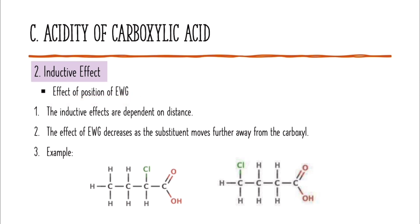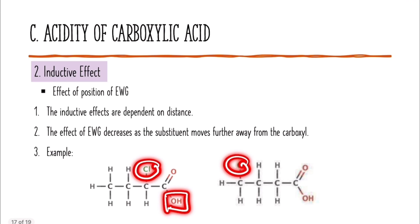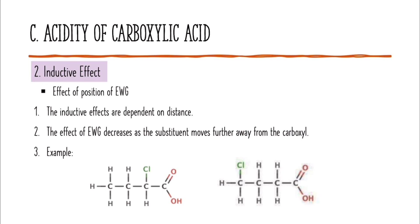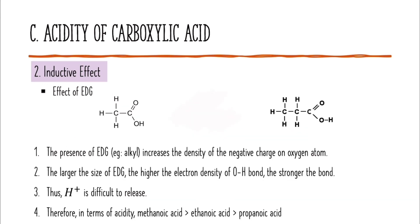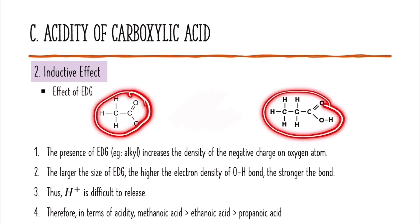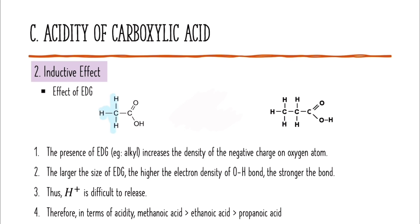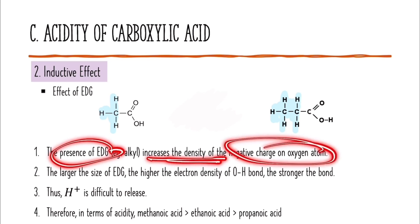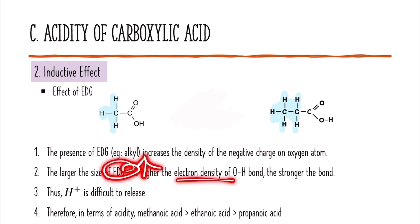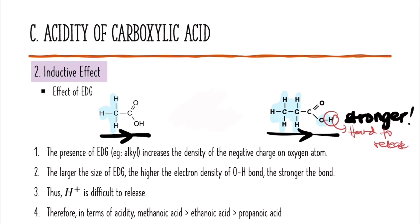The position of the EWG also affects the acidity of carboxylic acid. The effect of the EWG decreases as the substituent moves further away from the carboxyl group, so the compound with EWG closer to the carboxyl group is more acidic. Regarding EDG — for example, an alkyl group — the presence of EDG increases the electron density of the negative charge on the oxygen atom. The larger the EDG, the higher the electron density of the OH bond, making it stronger and H+ more difficult to release. Therefore, in terms of acidity, methanoic acid is more acidic than ethanoic acid, which is more acidic than propanoic acid.